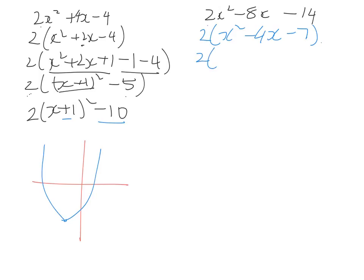So 2x squared minus 4x, we're going to halve this 4 and square it. So we're going to end up with plus 4 minus 4 minus 7. Factorize that to x minus 2 all squared minus 11.